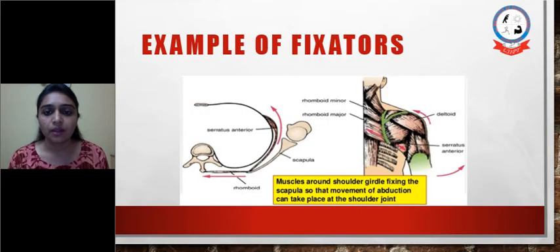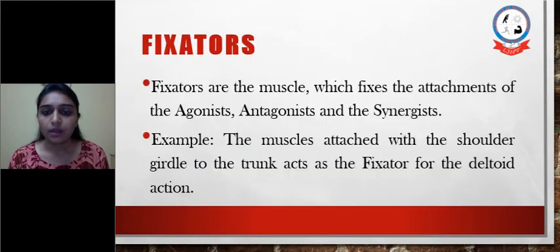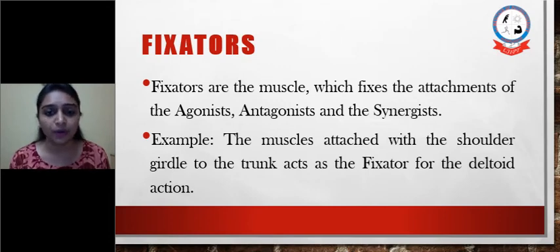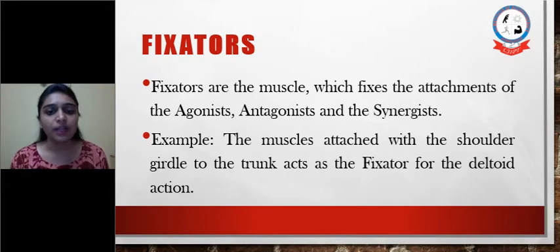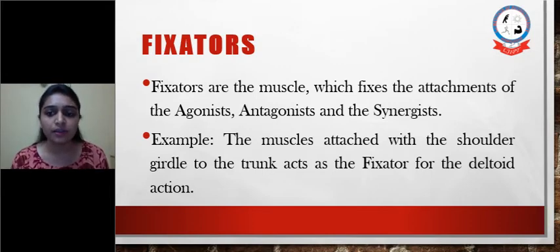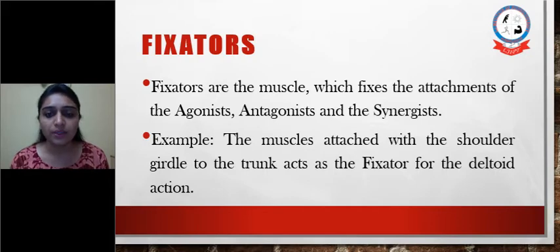Fixators are the muscles which fix the attachment of the agonist, antagonist, and synergist. So fixators, as the name suggests, fix the bony part so that the agonist, antagonist, and synergist can work easily. For example, the muscles attached from the shoulder girdle to the trunk act as fixators for the deltoid muscle action.